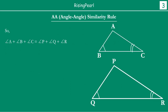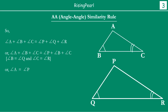From these two equations, both values equal 180 degrees, so angle A plus angle B plus angle C is equal to angle P plus angle Q plus angle R. Now, we already know angle B and angle Q are the same, so angle B and angle Q cancel off. Similarly angle C and angle R will cancel off — they are the same on both sides of the equation. What you are left with is angle A equal to angle P.